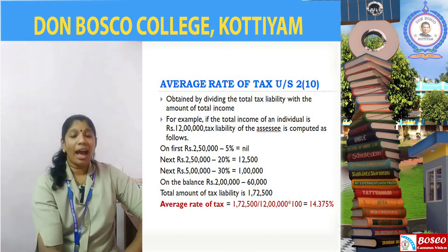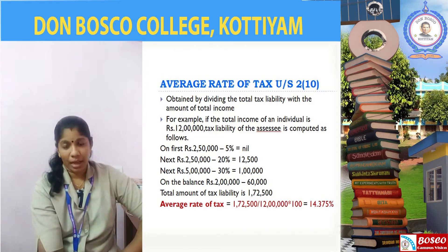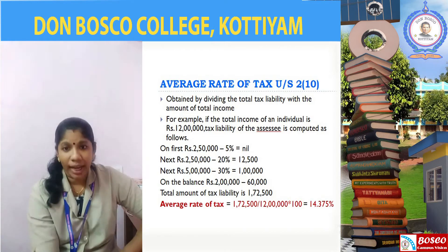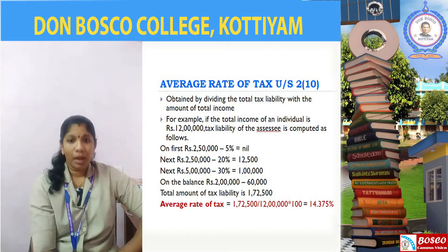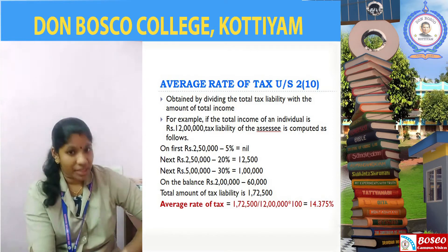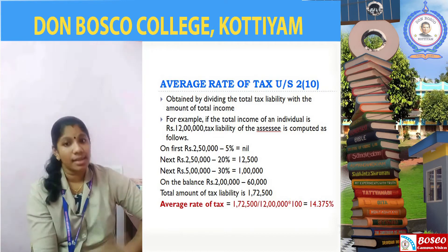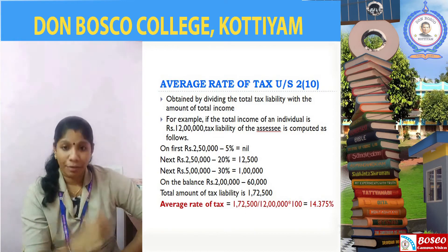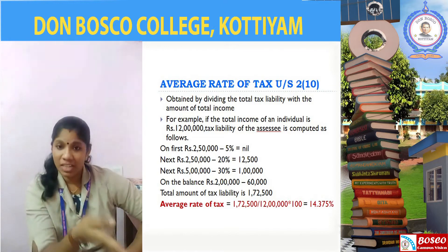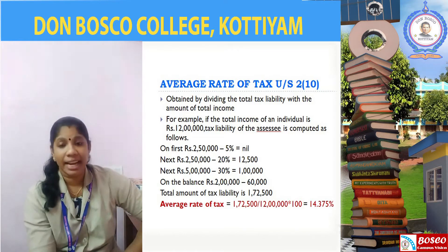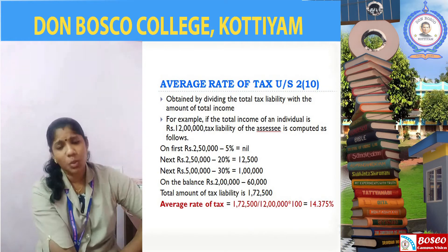Now let us understand average rate of tax with an example. As we all know, the rate of tax applicable to individuals is: up to rupees 2 lakh 50 thousand — nil; between 2 lakh 50 thousand to 5 lakh — 5%; between 5 lakh to 10 lakh — 20%; and above 10 lakh — 30%.